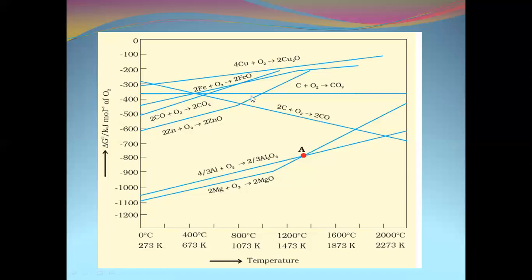Below 673 Kelvin, carbon monoxide is a better reducing agent, and above 673 Kelvin, coke is a better reducing agent as per the Ellingham diagram. However, practically it is found that above 1073 Kelvin, coke is used as the better reducing agent, and below that, carbon monoxide is used as the reducing agent. This will be further understood in the extraction of iron using the blast furnace in the next class.